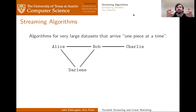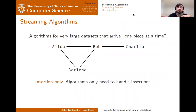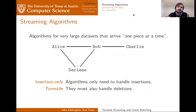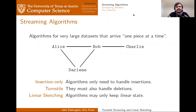In particular, we're going to be concerned about three models. The insertion-only model, in which an algorithm only has to handle additions to the data set. The turnstile model, in which an algorithm must handle both additions to and removals from the data set. And finally, the linear sketching model, in which the algorithm is required to only keep linear state — state that is linear in all of the updates it's seen to the data set so far.